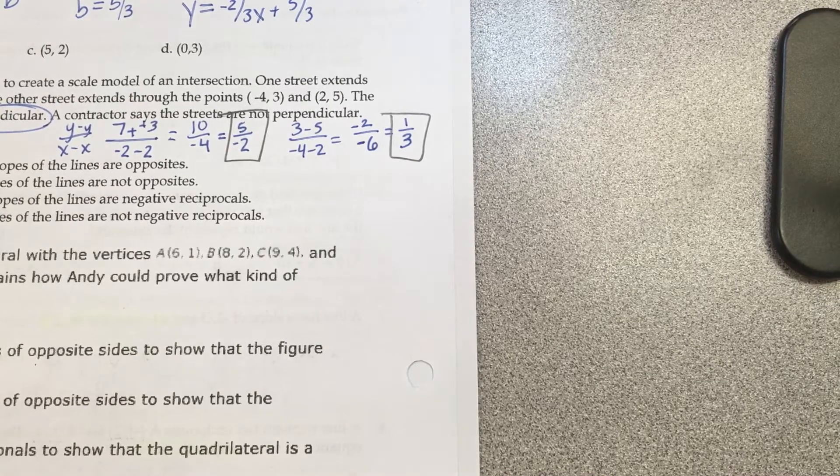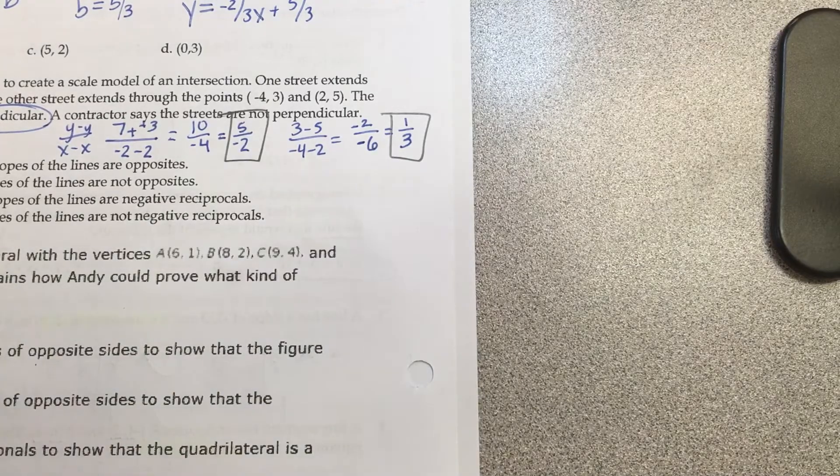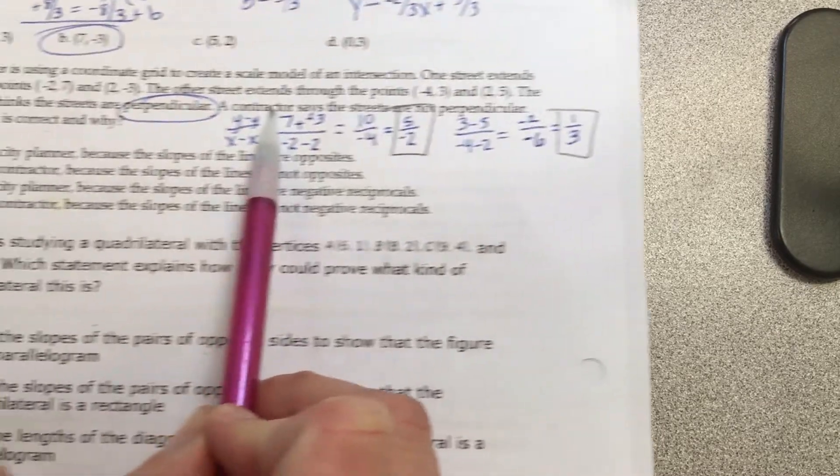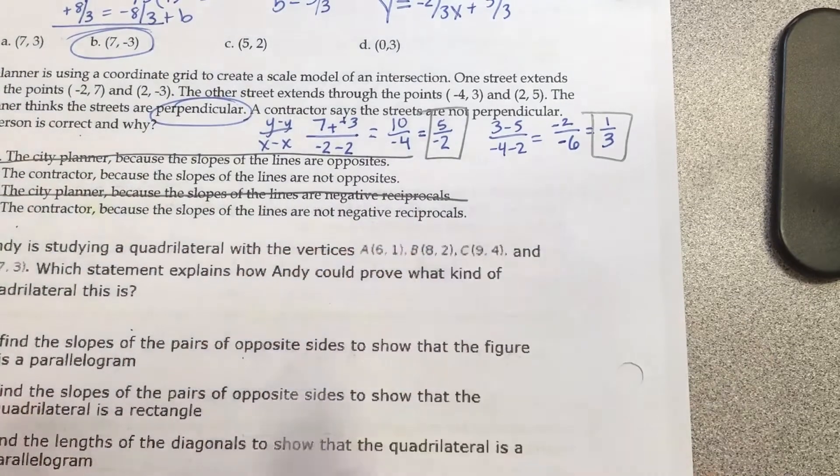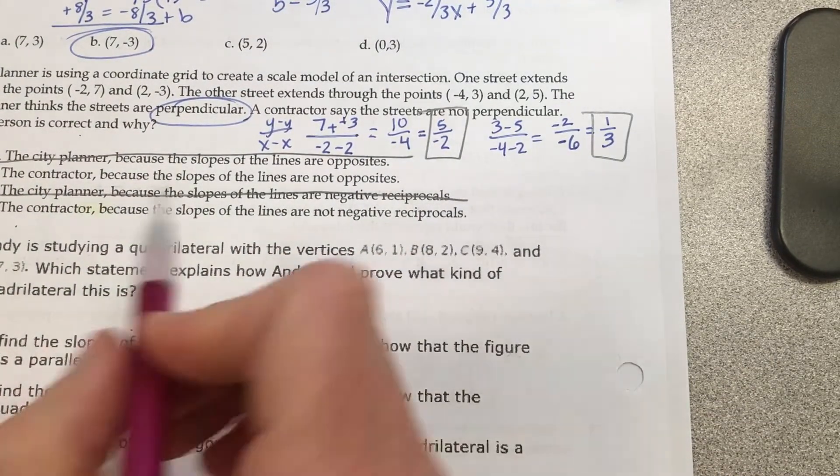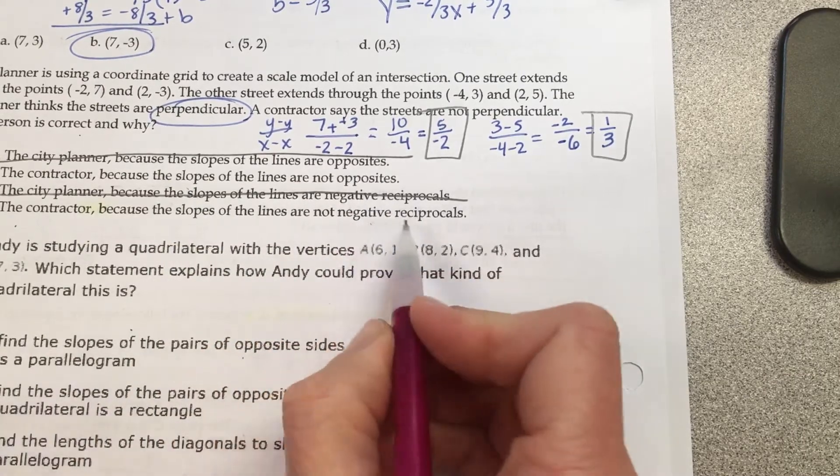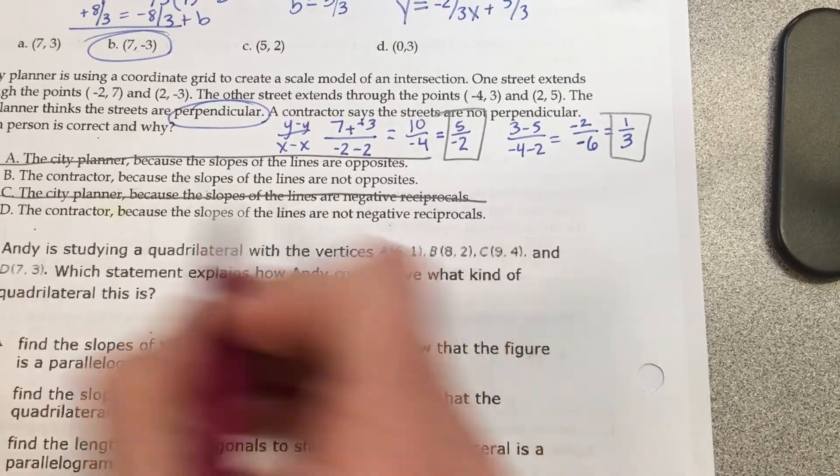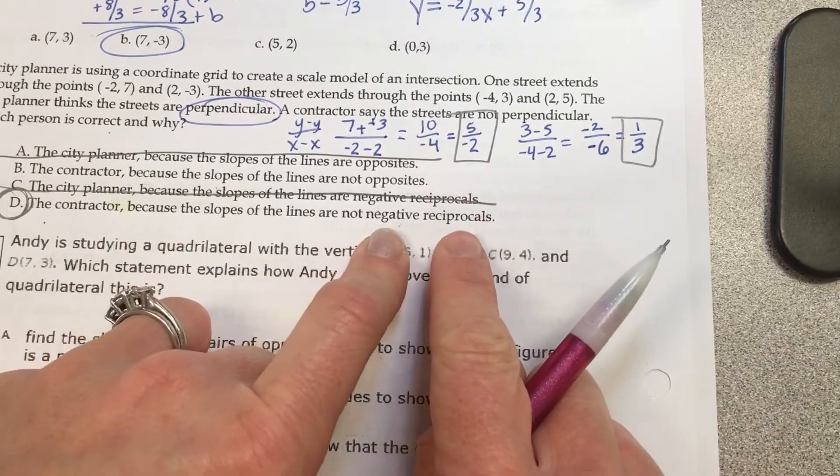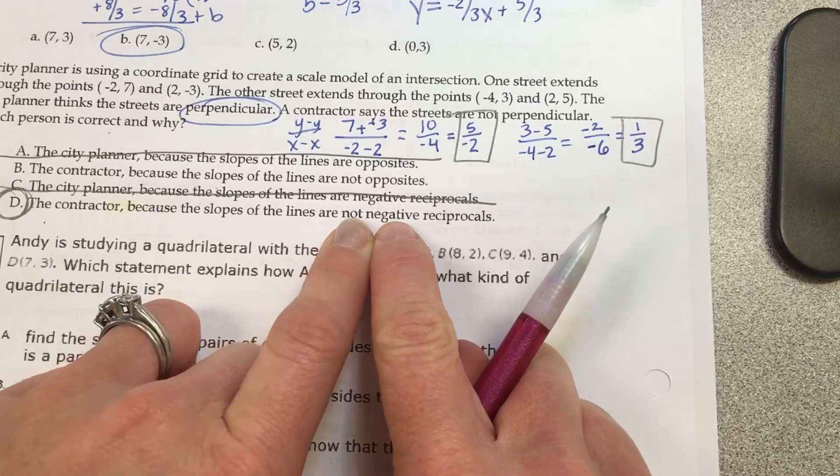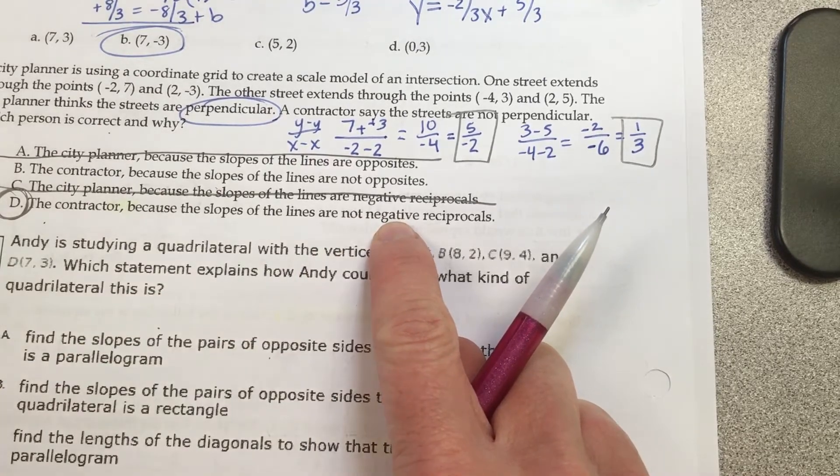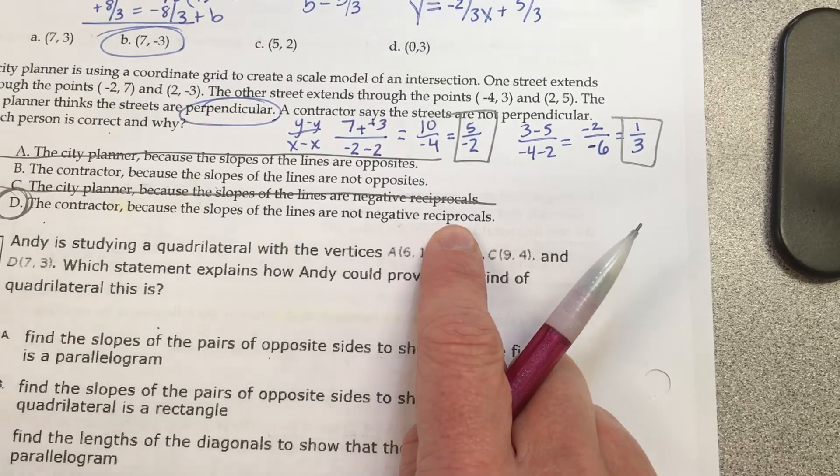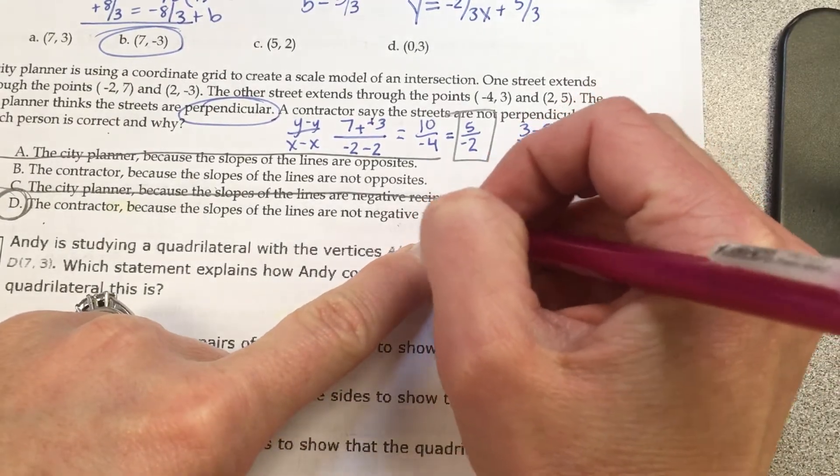Are they perpendicular? No. So they are not perpendicular. Who said they were not perpendicular? The contractor. So the contractor is correct. Are the slopes of the line supposed to be opposite or negative reciprocals? It is D. Negative means you would multiply it by negative 1, which means if it's negative it becomes positive, if it's positive it becomes negative. Reciprocal means to flip.